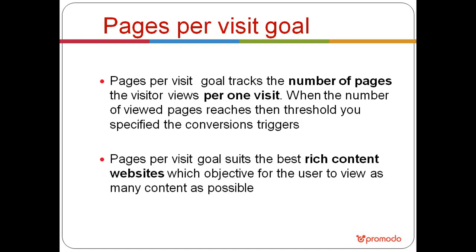The third type of goal is pages per visit. It is similar to the previous one in that it measures user engagement. For example, if you want users to view as many pages as possible — perhaps to see more banner ads and generate more income — you can set a defined number of pages viewed per visit to trigger a conversion.